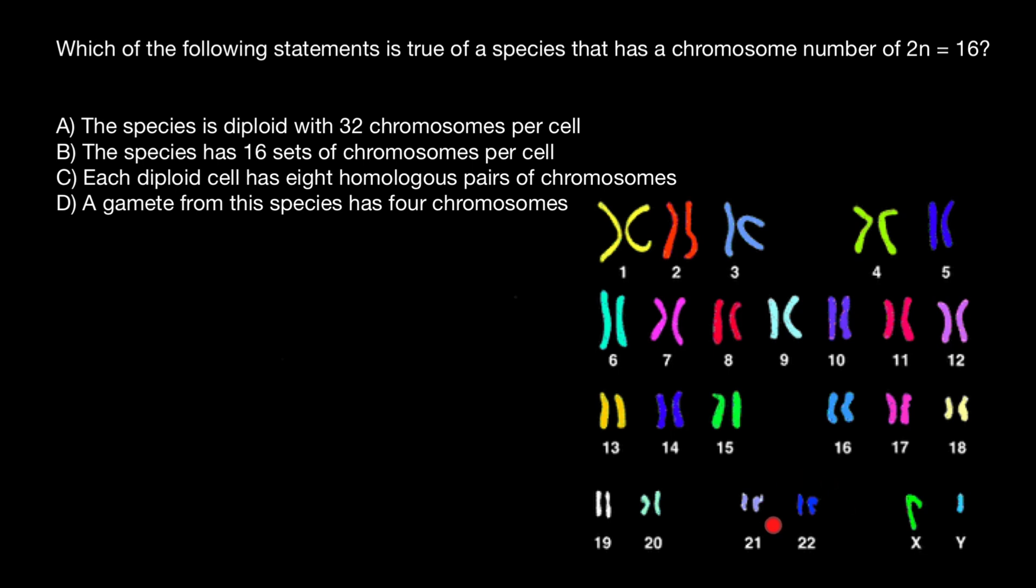In human karyotype, we can find 23 pairs of chromosomes, 22 pairs of autosomes, and one pair of sex chromosomes.